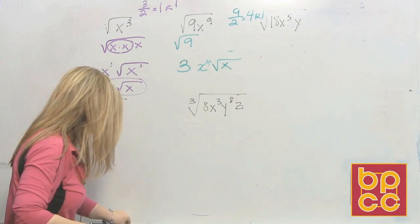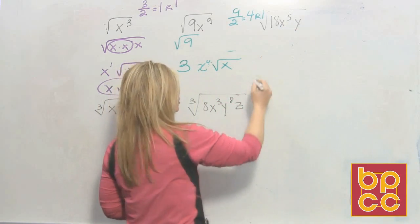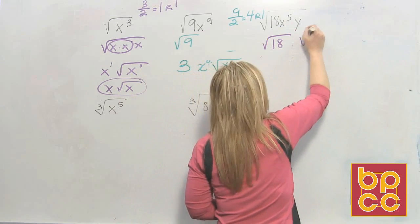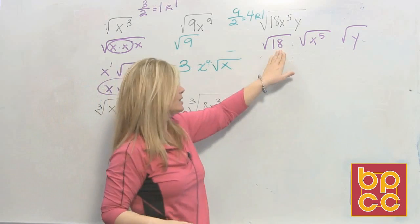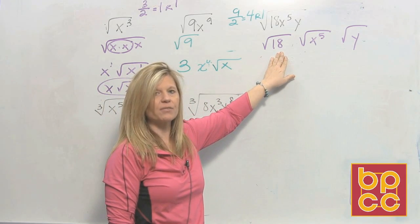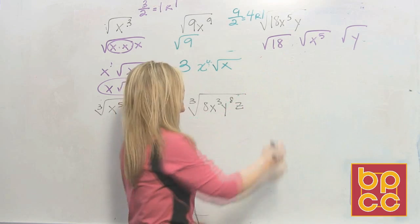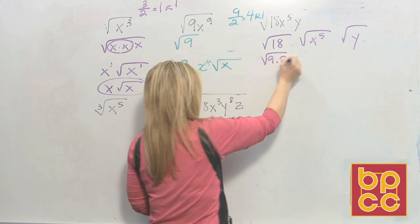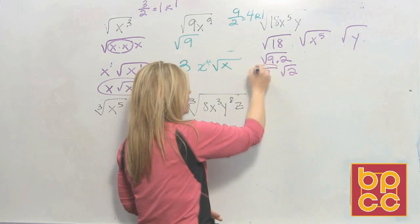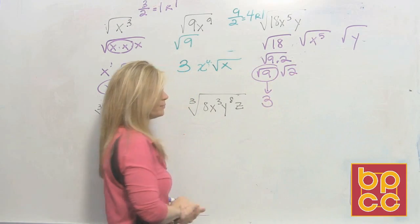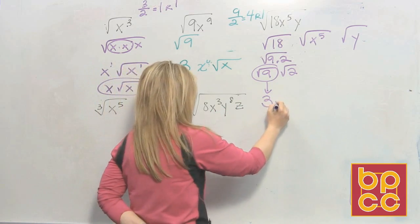Next example: square root of 18x to the 5th y. That's all connected by multiplication, so I'm asking you to square root three things: 18, x to the 5th, and y. Is 18 a perfect square? Is there a number times itself that's 18? No. So what is the biggest perfect square that divides into 18? That's 9 times 2. So we'd say this is the square root of 9 times the square root of 2. The square root of 9 is 3. Can we square root 2? No — that's in lowest terms, so it stays as square root of 2.